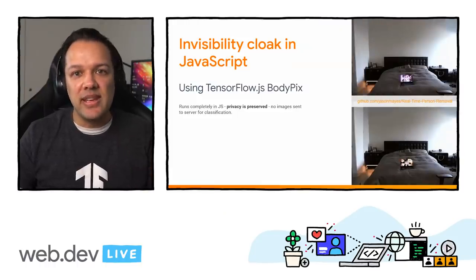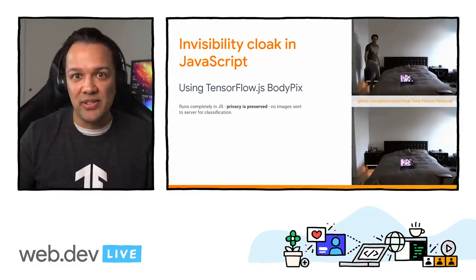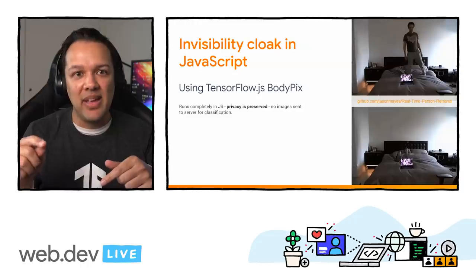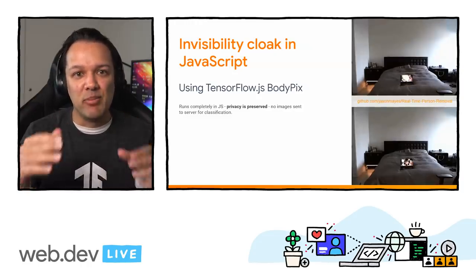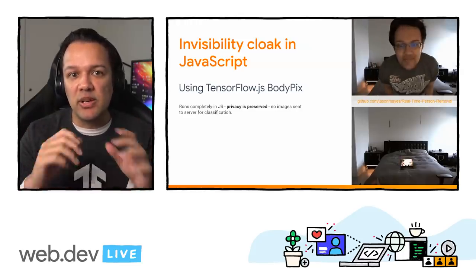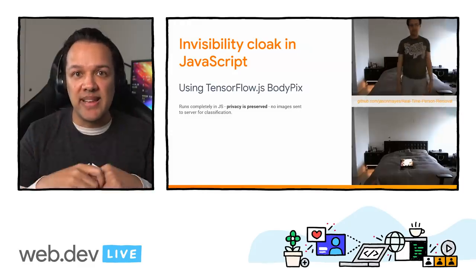I'm Jason, and yes, I have created an invisibility cloak. In the demonstration you can see that as I get on the bed, the bed is deforming in real time and I'm being removed from the frame. This is running all in the web browser, which is pretty cool because privacy is preserved — none of these images are being sent to the server side. That's super powerful, especially today where privacy is top of mind. This was created in just under a day, so it's quite easy to get started with machine learning in the web browser. I also created a Chrome extension using body pixels for image segmentation, allowing me to join a Google Meet meeting with these effects.